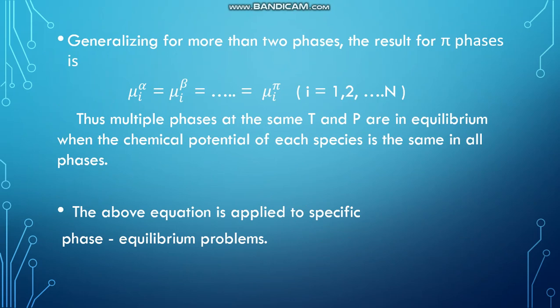Generalizing for more than two phases, the result for π phases can be written as μᵢ^α = μᵢ^β = ... = μᵢ^π, where π is the number of phases.